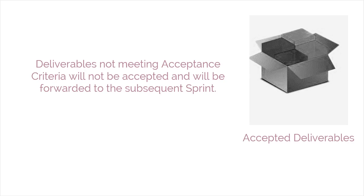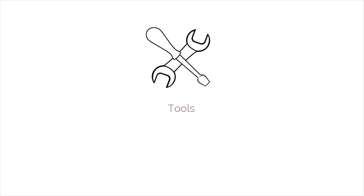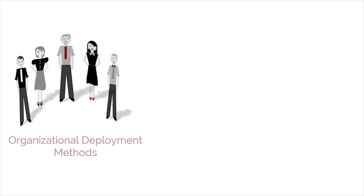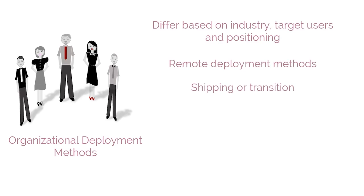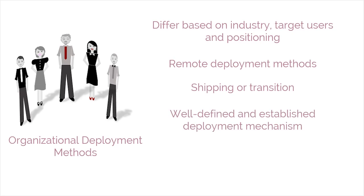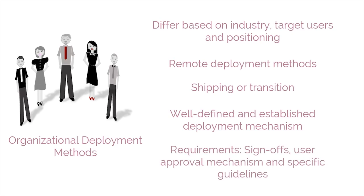Now that we have the inputs ready, let's see what tools are available to carry out the process. In the ship deliverables process, the main tools involved are the organizational deployment methods. The deployment mechanisms of each organization tend to be different based on their industry, target users, and positioning. Depending on the product being delivered, deployment can take place remotely or may involve the physical shipping or transition of an item. Because deployment tends to involve a high level of risk, organizations normally have well-defined deployment mechanisms with detailed processes in place to ensure compliance with applicable standards and quality assurance measures. These might include sign-offs by specific management representatives, user approval mechanisms, and guidelines regarding minimum functionality for a release.